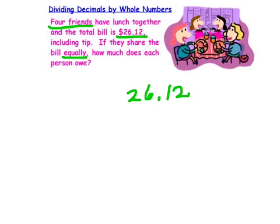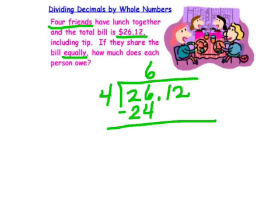$26.12 divided by 4 people. 4 doesn't fit into 2 but it fits into 26, 6 times. It gives you 24. Subtract down. Drop your 1. 4 goes into 21, 5 times. 5 times 4 is 20. Subtract down.